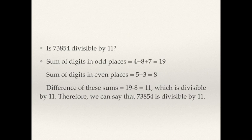Children, be careful about one thing in this test: students tend to get confused about odd places. Remember, in this case 4 is an even number, but it is placed in the odd place — that is, the first place starting from the right. Similarly, 8 is also an even number, but it is placed in the third place, which is an odd position. So 4 plus 8 plus 7 are the digits in odd places. Please be careful about only this distinction in the divisibility rule of 11.